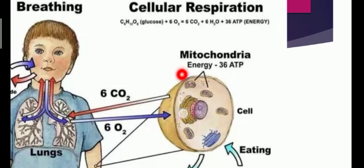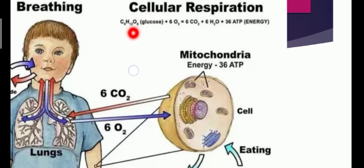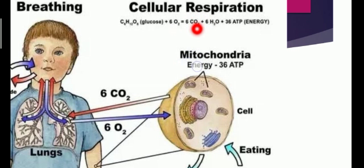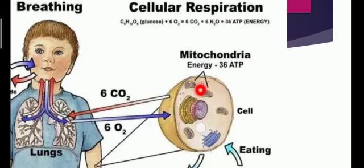In the previous chapter on the cell, you might have studied that mitochondria is known as the powerhouse of the cell, meaning that during the time of need, mitochondria release energy. The cells contain glucose. When our body requires energy, the glucose breaks down in the presence of oxygen — the oxygen which we take in through inhalation — and gives carbon dioxide, which is thrown out from our body. Water and energy are stored in the form of ATP in mitochondria.